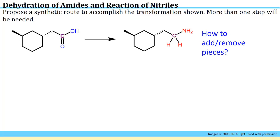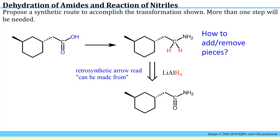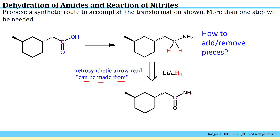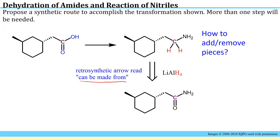Now we have to think carefully about how we're going to add and remove these pieces, and we do this by thinking in the backwards direction using the retrosynthetic arrow. In this case you say: I can make this compound from this species using this route. Thinking in the traditional forward direction, here's this amide — we react with lithium aluminum hydride and that will give us addition of the two H's, just like in the first problem of this homework set. So we could accomplish removing the O and replacing it with two H's.